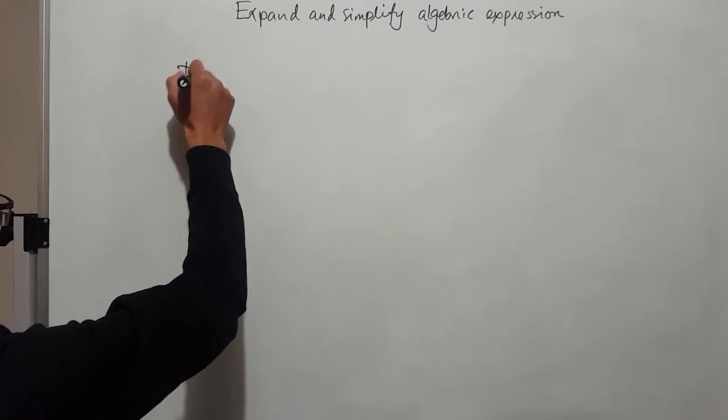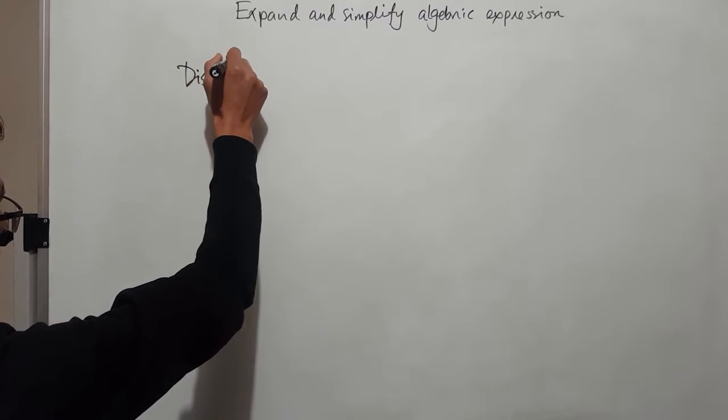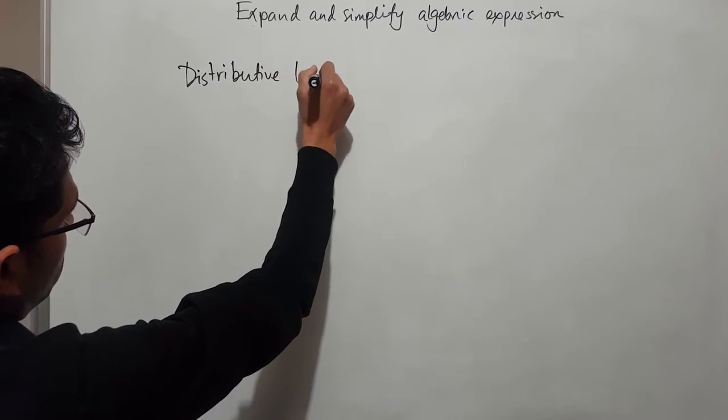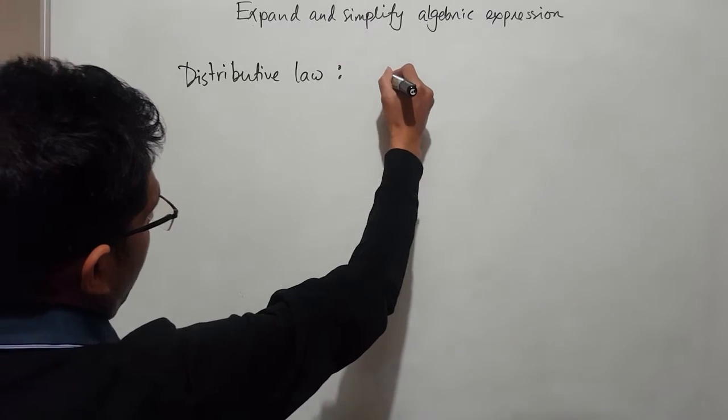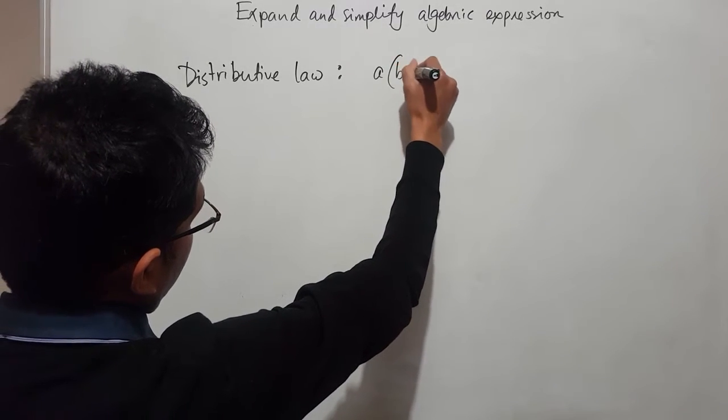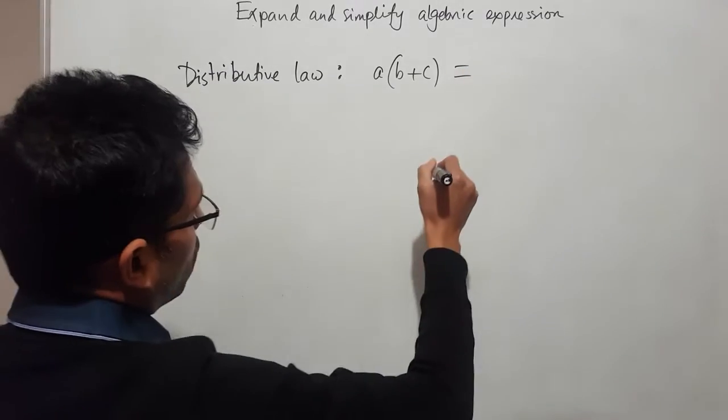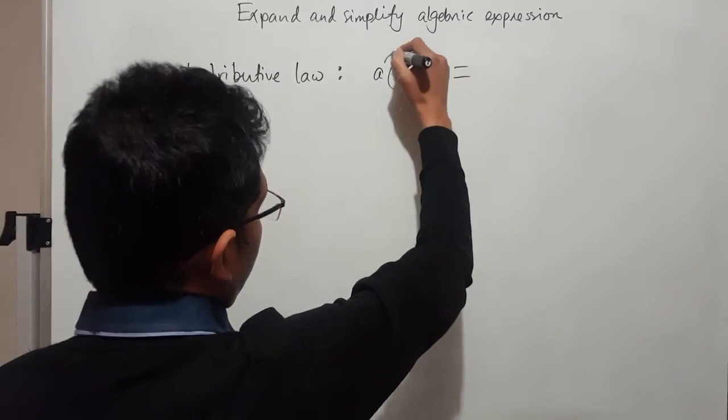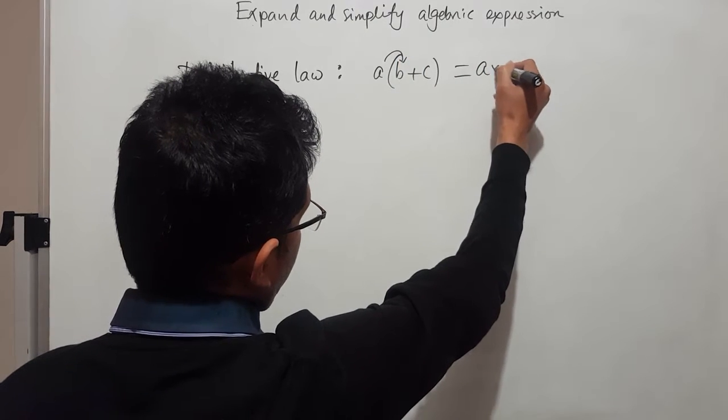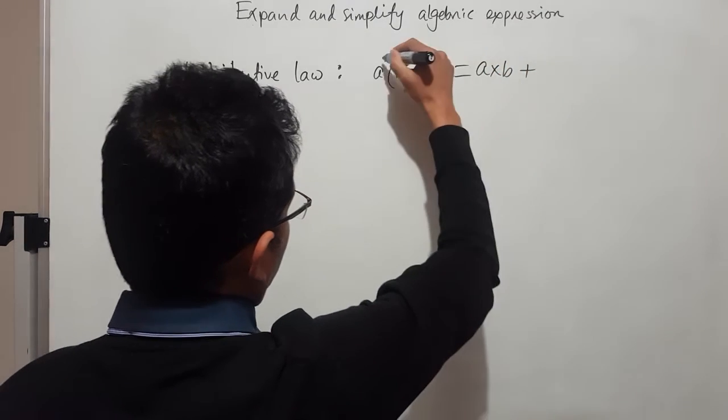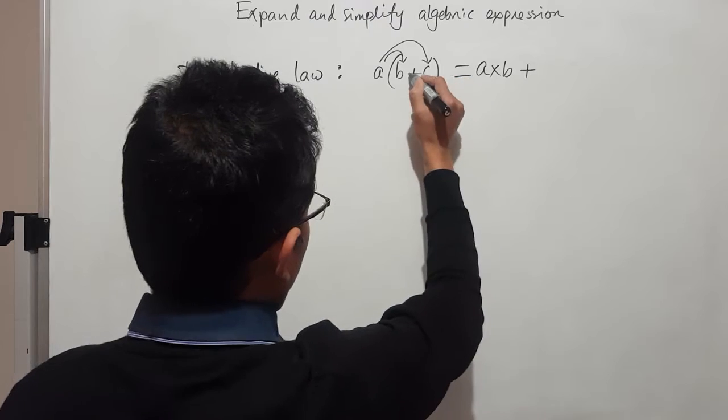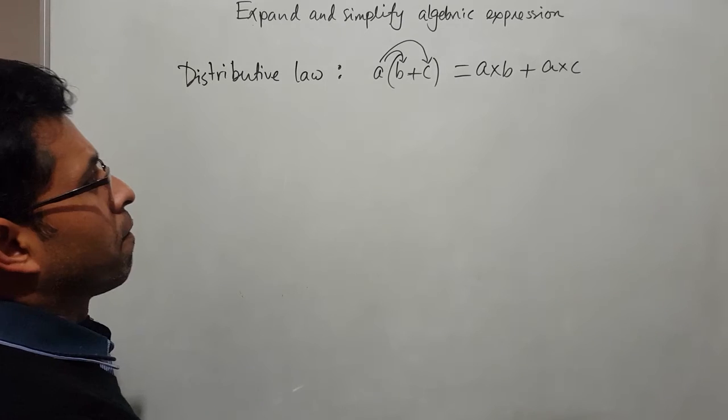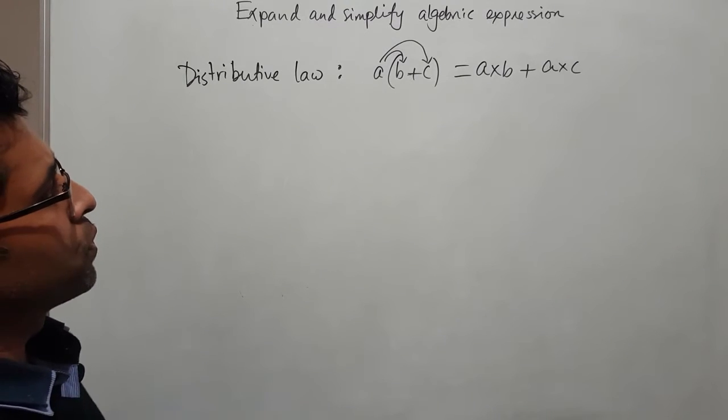So the distributive law: if we have a times b plus c in a bracket, we can multiply a with b which is a times b, plus a times c. That's called distributive law.